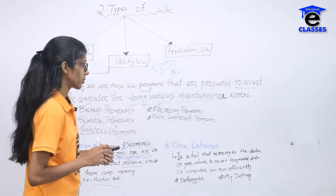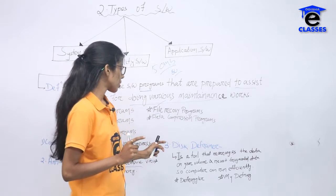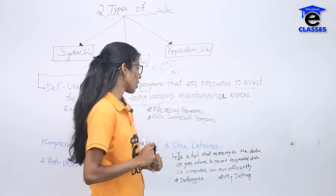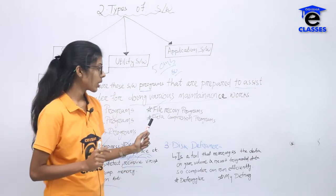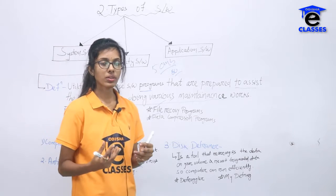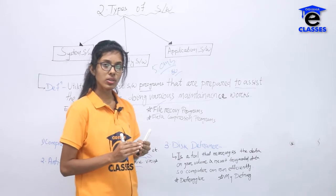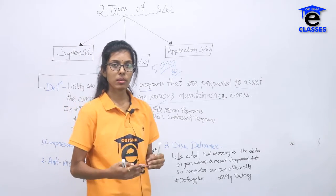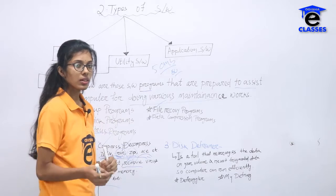Disk defragmenter — it is a tool that rearranges the data on your volume and reunites the fragmented data. Data can reuse the volume by rearranging or reuniting fragmented divisions, so the computer works more efficiently and smoothly. So we use disk defragmenter.